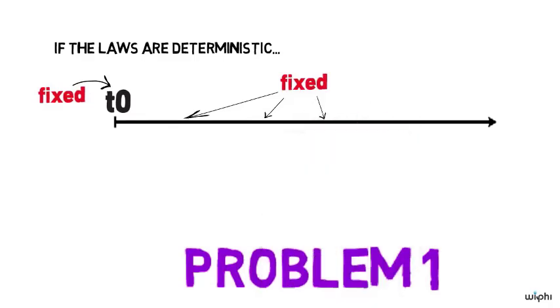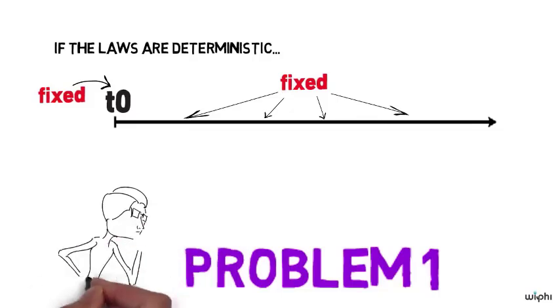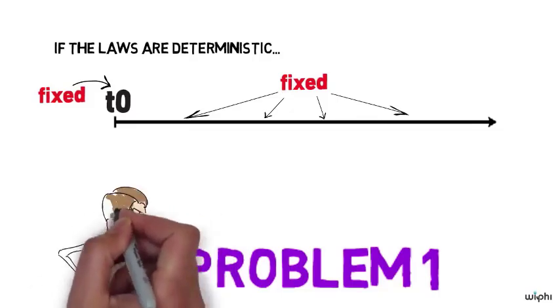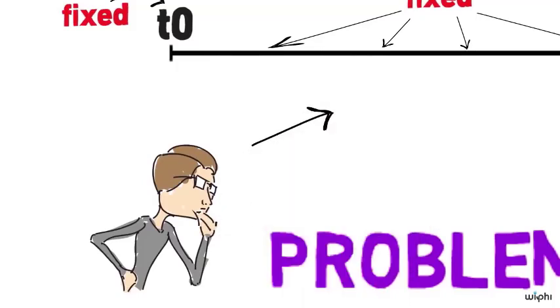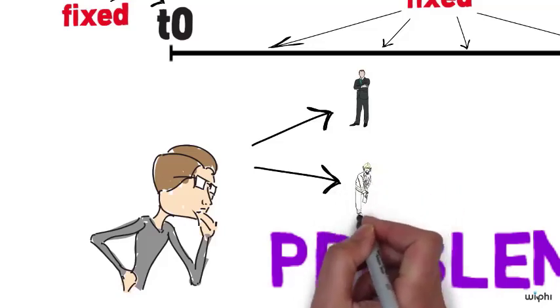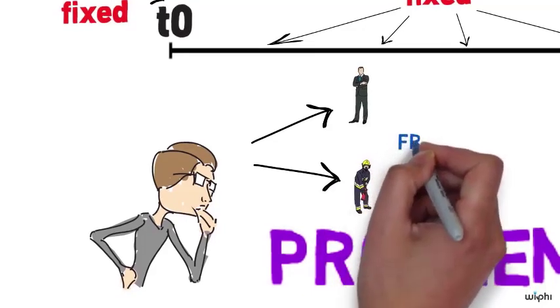People have thought, understandably enough, that that puts a real problem on free will, because part of the intuitive idea of free will is that when I'm faced with some choice, some decision, I could choose one way and act that way, or I could choose the other way and act that way, and those two choices are free.